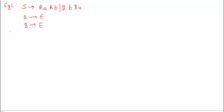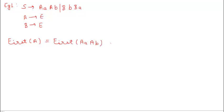To find the predictive parsing table, the first thing we need to do is calculate the FIRST set of all non-terminals that have production rules. So we start by calculating FIRST(A). FIRST(A) can be found by computing FIRST of (A a A b) union FIRST of (B b B a).